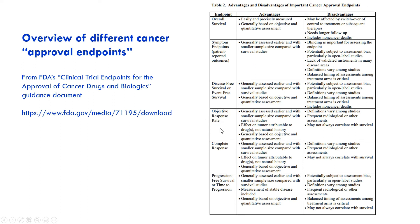If you do a study and measure ORR as your primary endpoint, FDA can consider that as something that can support the approval of a drug. ORR is nice because it measures drug effect, not natural history. That's an important concept in drug development — a lot of diseases can see patients improve over time even without a drug, which can mess with your determination of whether a drug is working.